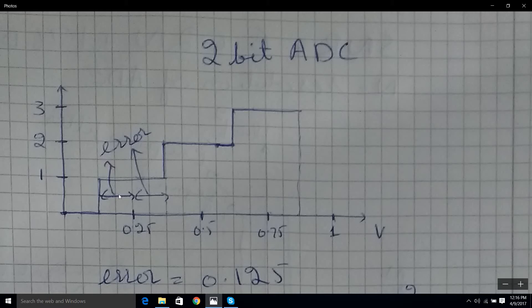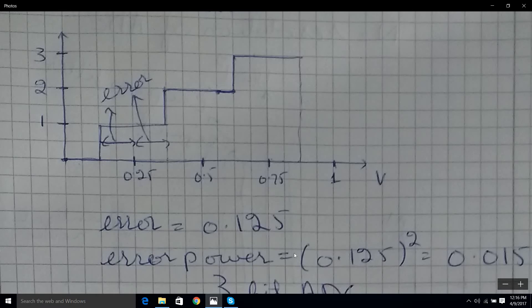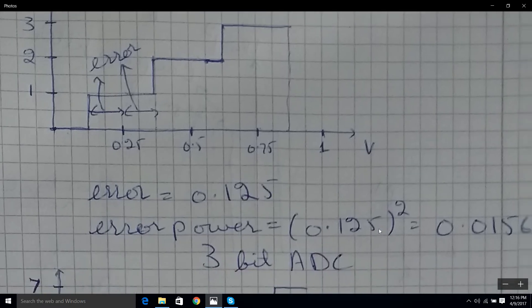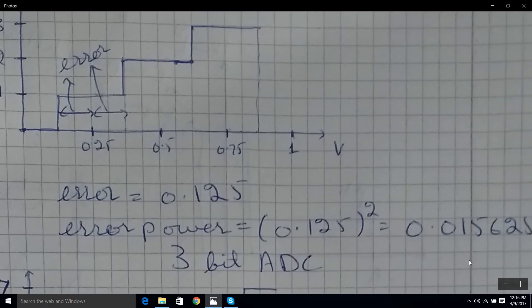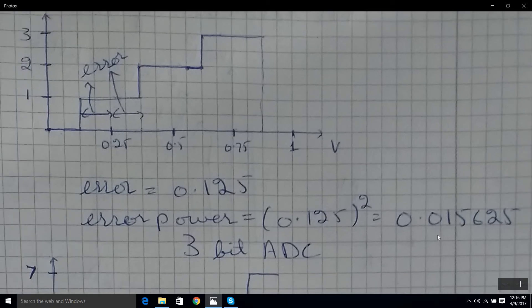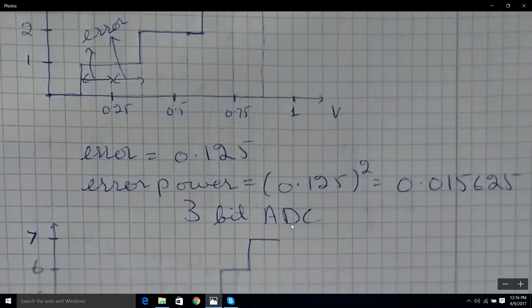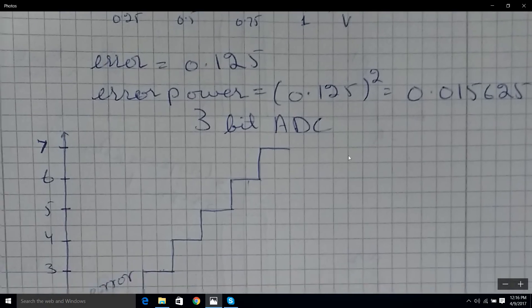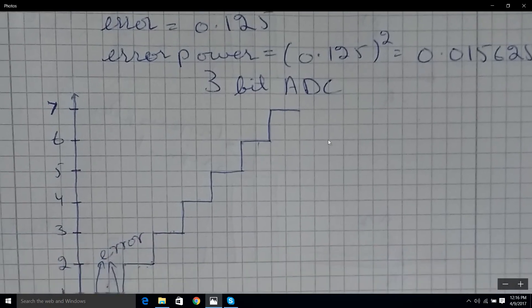The error power is 0.125 squared, which is 0.015625. Now let's take a 3-bit ADC and see what happens.